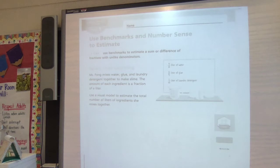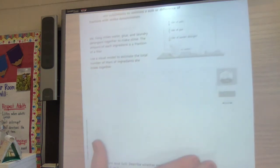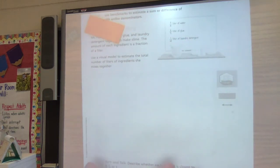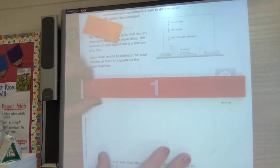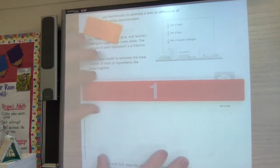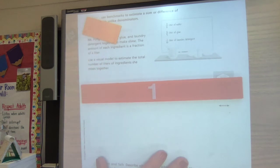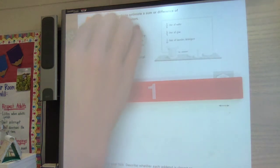Okay, so this says Mrs. Fong mixes water glue and laundry detergent together to make slime. The amount of each ingredient is a fraction of a liter. Use a visual model to estimate the total number of liters of ingredients that she mixes together. So, like we've done the whole time we've been doing this, a good benchmark is a whole, and then we can put all of our parts together.